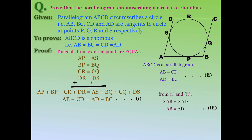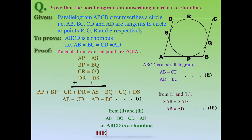AB and AD represent two adjacent sides of the parallelogram. From Result 2, opposite sides are equal, and from Result 3, adjacent sides AB and AD are also equal. So all four sides are equal: AB = BC = CD = AD, hence ABCD is a rhombus.